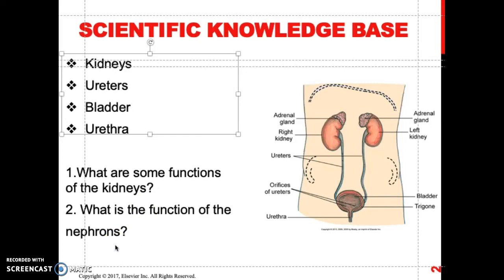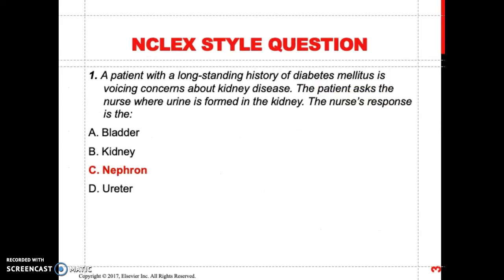The kidney also consists of nephrons, which are made up of capillaries called the glomerulus. Nephrons are the functional unit of the kidney, and their function is to maintain fluid and electrolyte balance. Here's a simple NCLEX-style question: a patient with a long-standing history of diabetes mellitus asks the nurse where urine is formed in the kidney. The nurse responds: the nephron. That's a knowledge-based question.